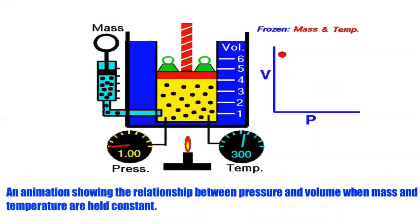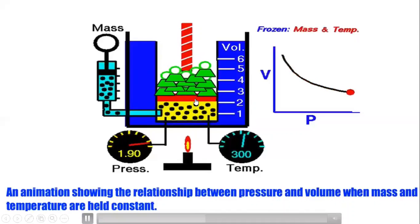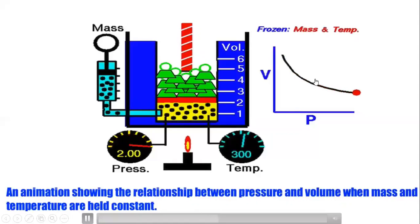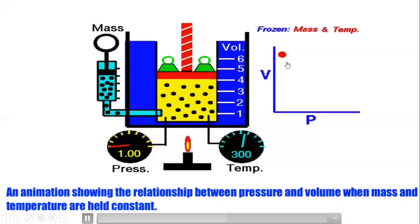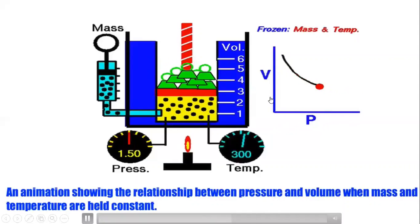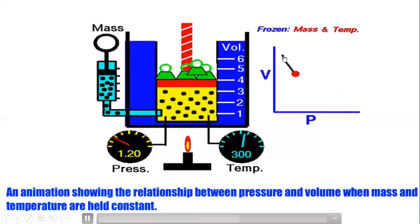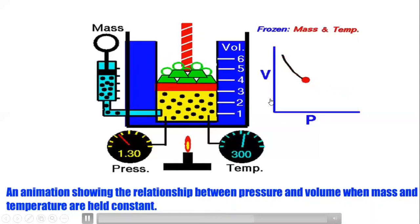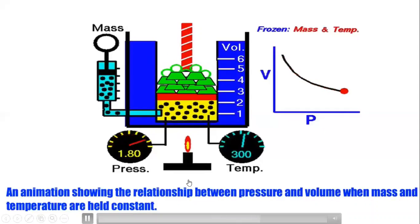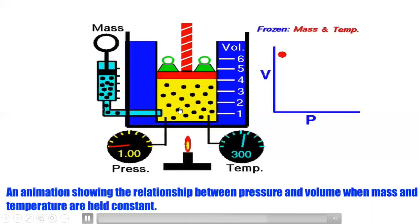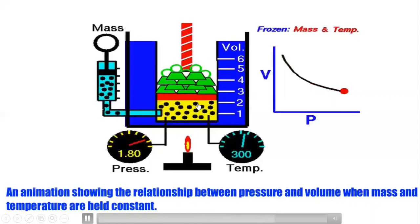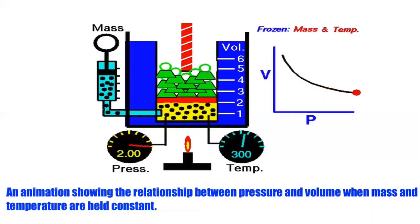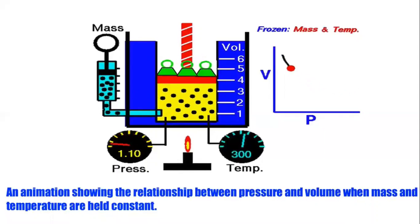When we remove the load from the piston, pressure decreases and the gas moves upward, so volume increases. This demonstrates the inverse relation between pressure and volume. From the hyperbolic graph, we can see that high pressure corresponds to low volume and vice versa. We can conclude that the pressure of a gas is inversely proportional to its volume when mass and temperature are kept constant.